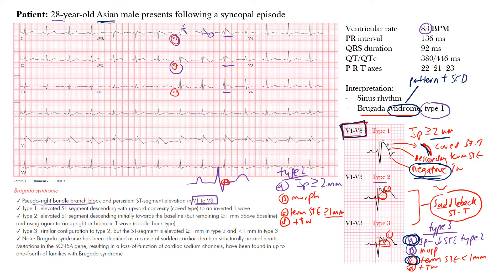This is an autosomal dominant sodium channelopathy — specifically the SCN5A mutation, a sodium channel mutation. It's more common in males. This is also a dynamic pattern that may appear with rest, sleep, increased vagal tone, fever, or if you administer sodium channel blockers or vagal tonic agents.